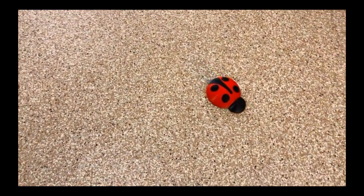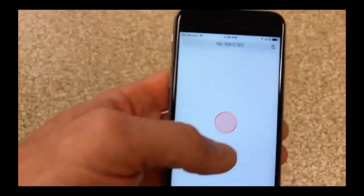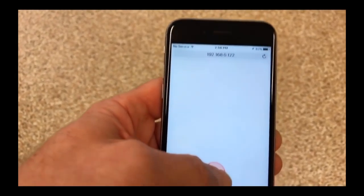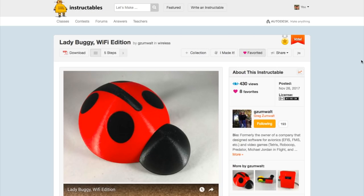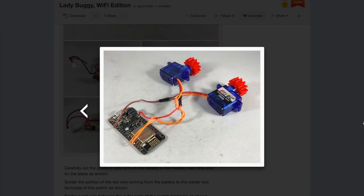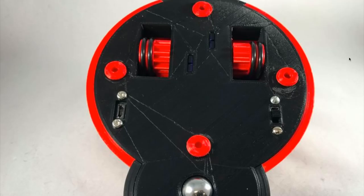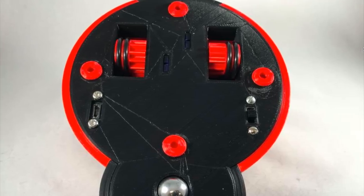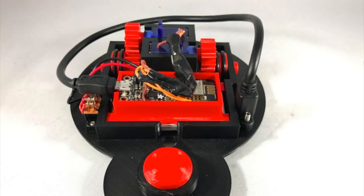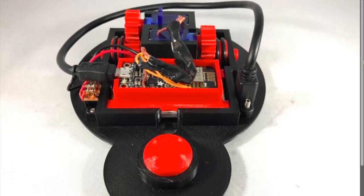Greg Zumwalt made this motorized ladybug toy that you can control with your phone over WiFi. The shell is 3D printed and includes printed gears for the two servo motors that push it around. You also get spots to mount them, along with cutouts for a power switch, USB port, and a spot for the rechargeable battery and Adafruit Feather Huzzah board.